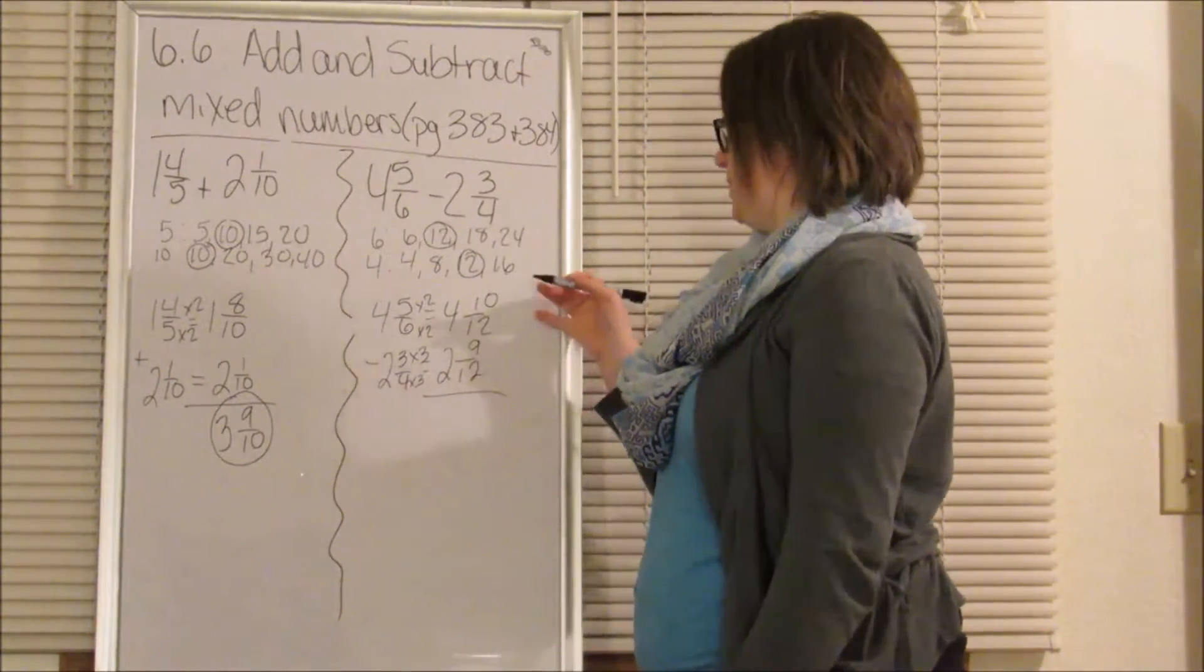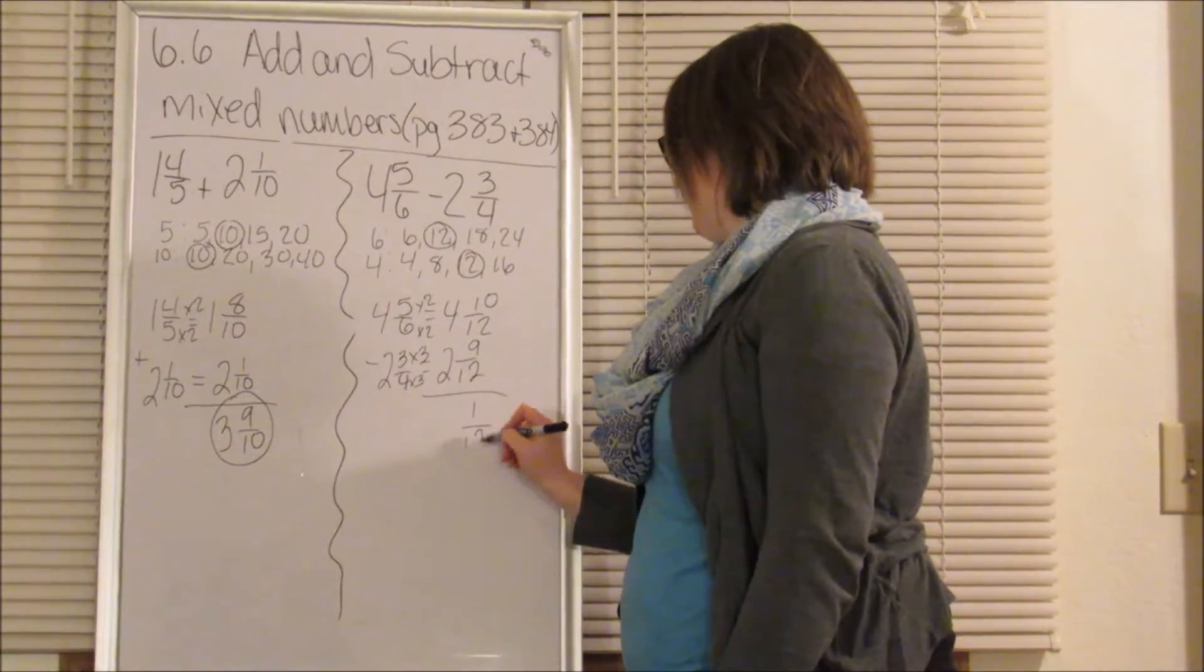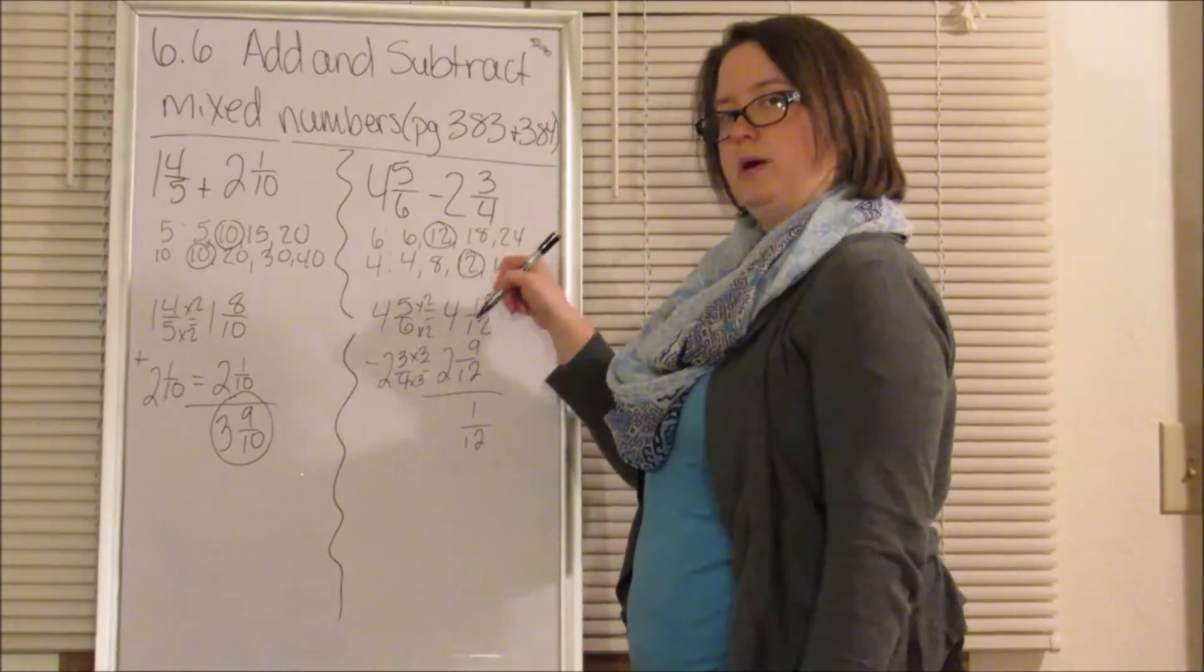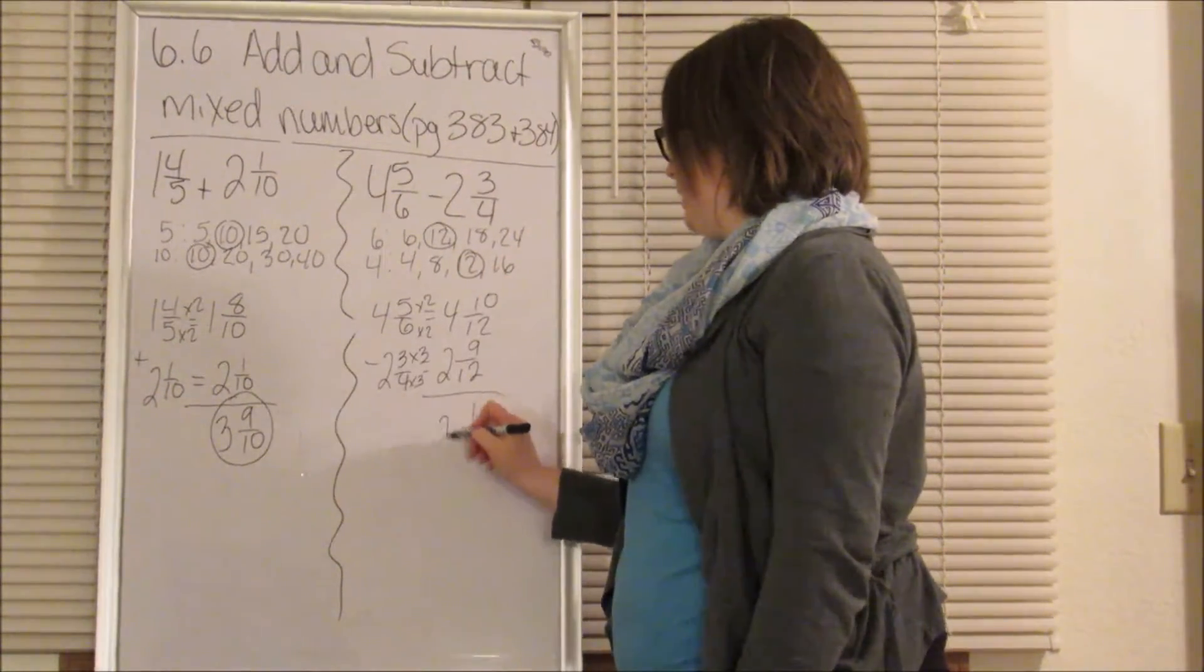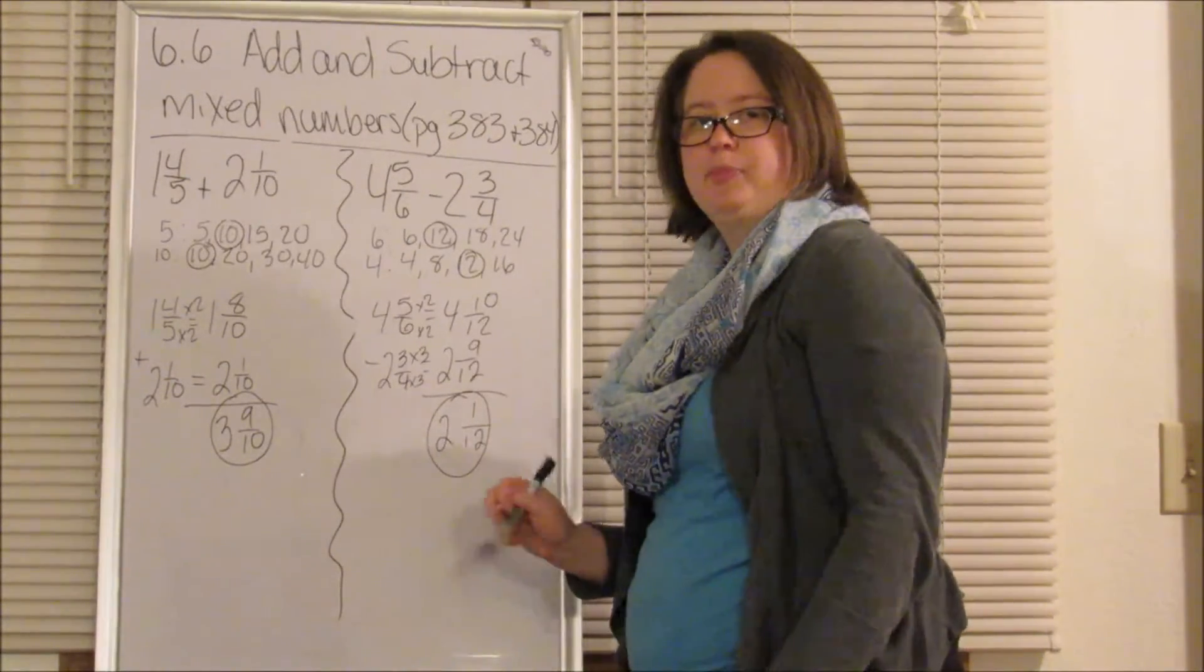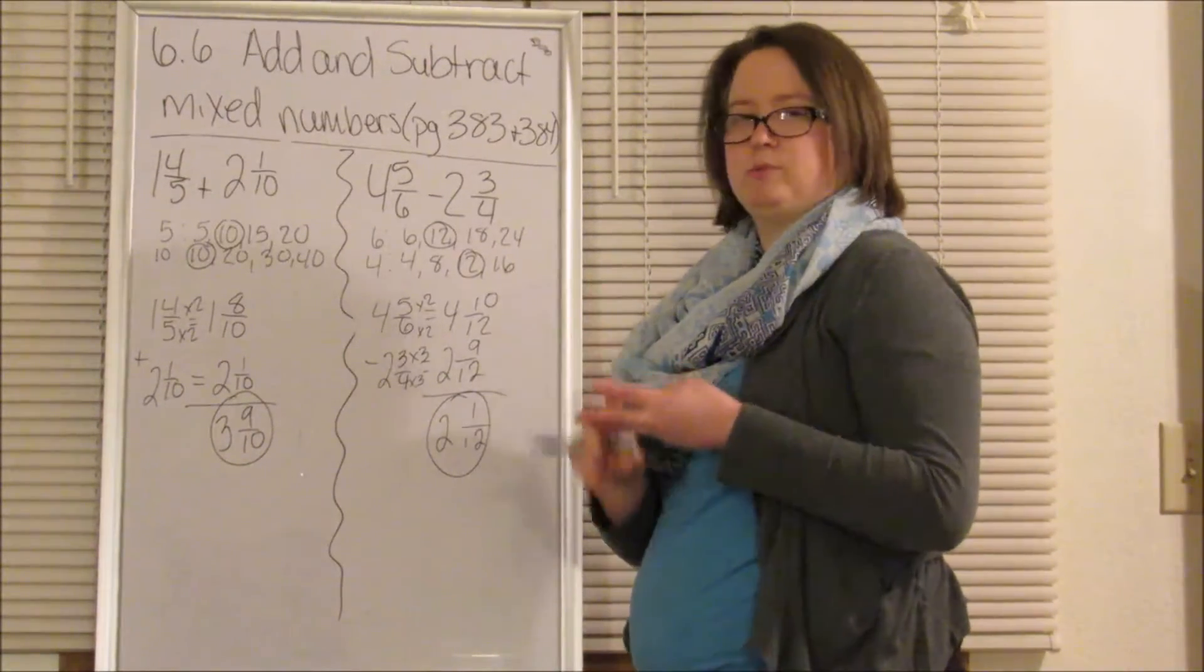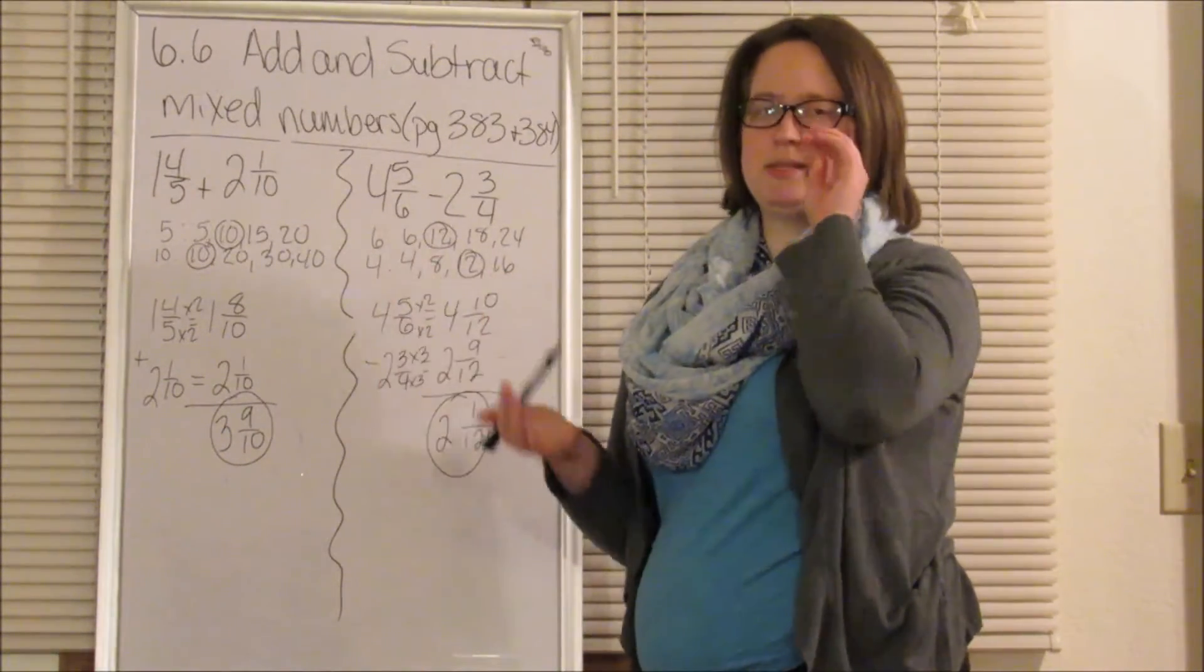Now we subtract. 10 twelfths minus 9 twelfths is going to equal 1 twelfth. Then 4 minus 2 is going to equal 2. So we get 2 and 1 twelfth as our answer. Again, we just found our common denominator, wrote our equivalent fractions, and then we subtracted. So it's the same steps that we have been doing.